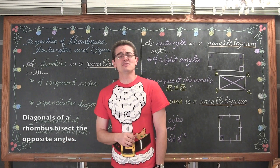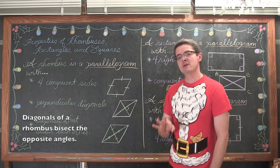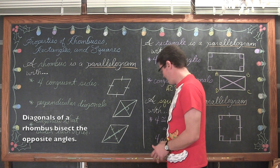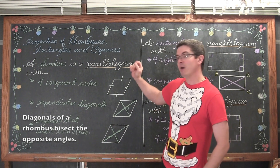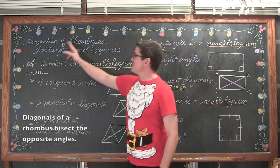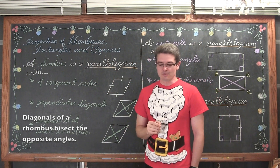BAM! Mr. Tarrou! In this video we are going to learn about three special types of parallelograms - the rhombus, rectangle, and squares.